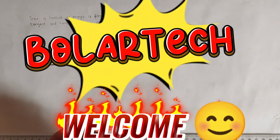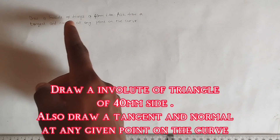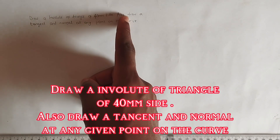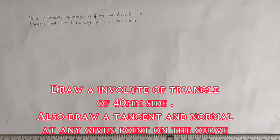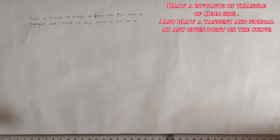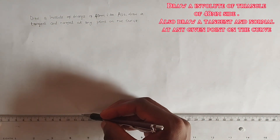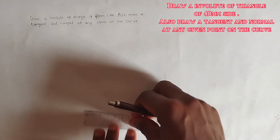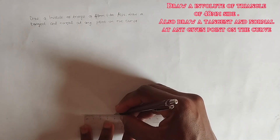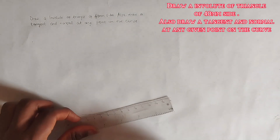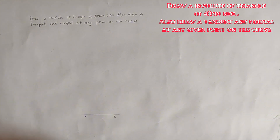Welcome to my channel. In this video we are going to be drawing an involute of a triangle. We have been given to draw an involute of a triangle of 40 millimeter sides and we are also given to draw the tangent and normal at any given point on the curve. First of all we are going to be drawing our triangle with 40 millimeter sides, so we draw a straight line and pick 40 millimeters on it. We label this point as point A and this point as point B.